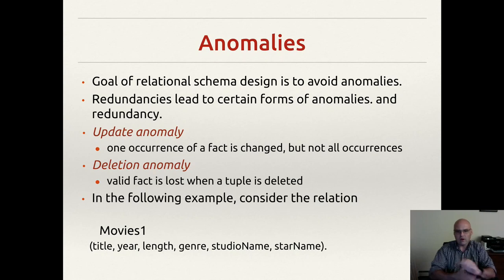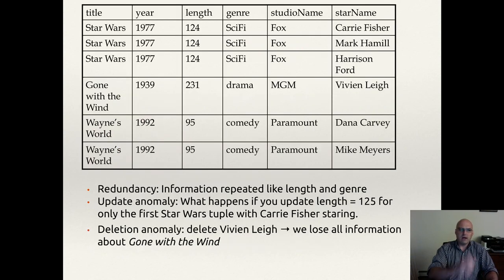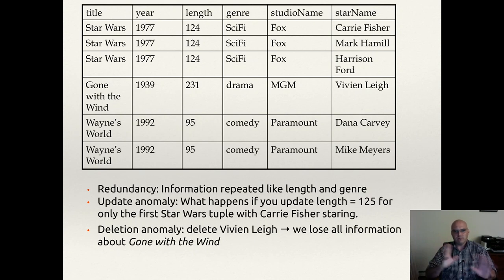We're going back to our movies relation with the attributes title, year, length, genre, studio name, and star name. Redundancy should jump out at you — year, length, genre, and studio name are all being repeated. Now, year is technically part of the key, so we won't count that. But length, genre, and studio name are most definitely redundant here.